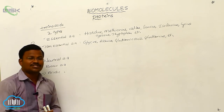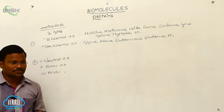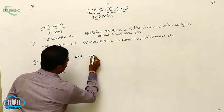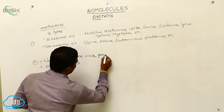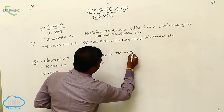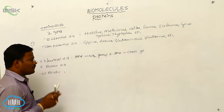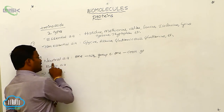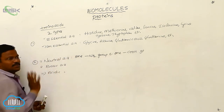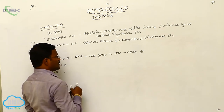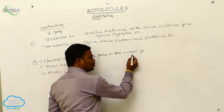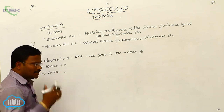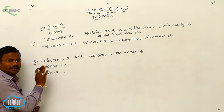Each amino acid consists of a minimum of one acidic functional group and one amino functional group. Those amino acids which have only one amino group (NH2) and one carboxylic acid group (COOH) — not more than one amine or more than one acid group — are called neutral amino acids. The amino group is a basic functional group and the carboxylic acid group is an acidic functional group, so one basic and one acidic group results in a neutral amino acid.